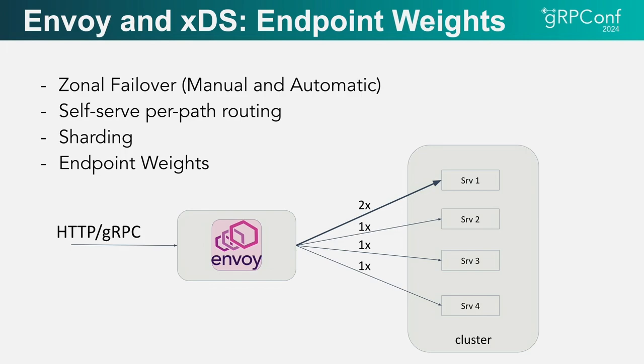We also use XDS for sharding in some places. The idea is that you look at the content of the request and route it to the right endpoint depending on what it contains. We also use endpoint weights — one of the main use cases for them is overload testing. You ramp up the weight of a single endpoint until it shows signs of overload, which gives you a baseline for what a given server can handle. All of these features we use with Envoy.